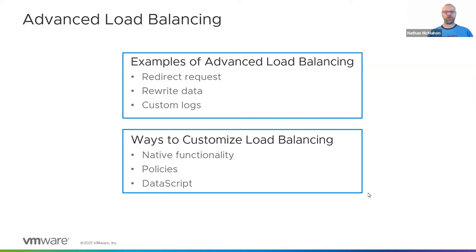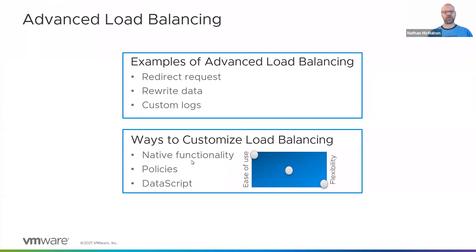There are a couple of different ways of doing things with AVI. You can use the native functionality — the native knobs — or you can use something like policies, which is more of a point-and-click way of some level of customization, or Datascript. Native functionality is just point and click, simple and easy to use, but it's not terribly flexible. Datascript, on the other hand, is a scripting language, so it's a lot more flexible, but it does mean it's a little bit more effort. Policies fall somewhere in between.